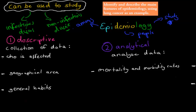There are three different types of epidemiology studies you should know. The first one is a descriptive study. What this entails is the collection of data. In a descriptive study, we just collect data — we don't really analyze it. First, we just collect it. Don't analyze it — that's next.